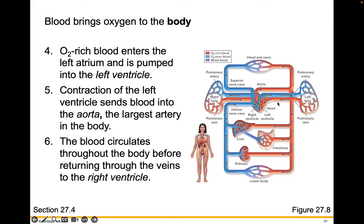So our model is becoming more complex. Oxygen-poor blood enters the heart through the right atrium, which pours into the right ventricle. It gets pumped from here out to the lungs, returns from the lungs back to the left side of the heart, enters the left atrium, goes down to the left ventricle, and then gets pumped up and out of the aorta to the whole body.